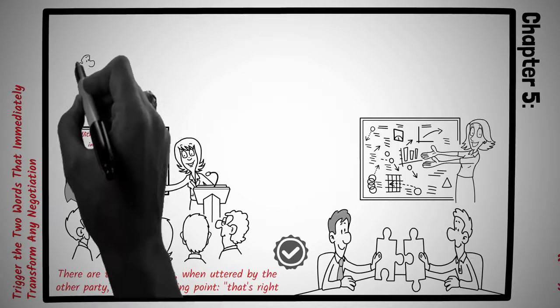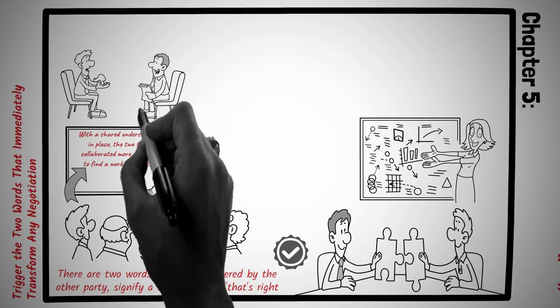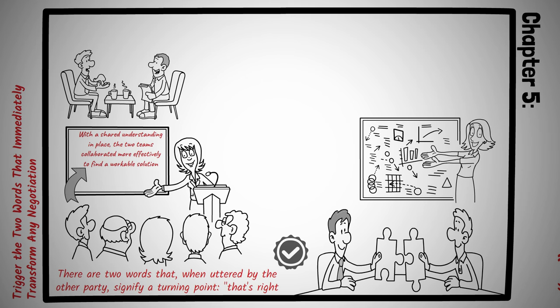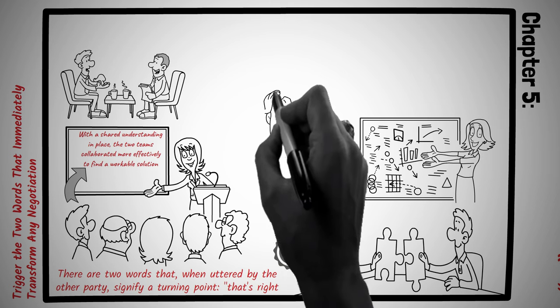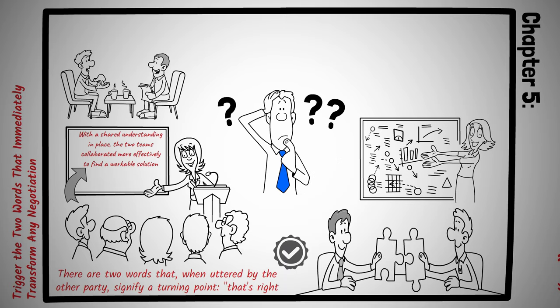Let's say you and your partner are having a disagreement about weekend plans. You want to visit family, but your partner seems reluctant without stating why. Instead of pushing your agenda, you decide to summarize their possible feelings. You're worried that if we spend another weekend with my family, we won't have quality time together, right? Your partner's eyes meet yours as they reply, that's right. With those two words, the underlying concern is out in the open, creating a foundation for a more constructive conversation.